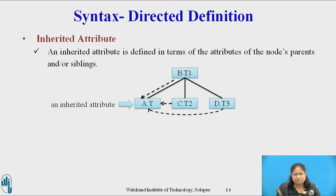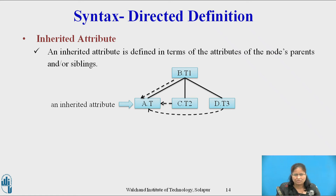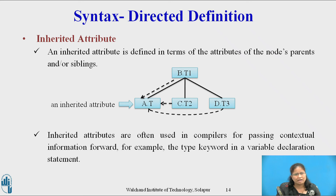An inherited attribute is one whose value at a node in the parse tree is defined in terms of the attributes at the parent and/or the siblings of that node. Inherited attributes can be used to check whether an identifier appears on the left or right of an assignment, in order to decide whether the address or the value of the identifier is needed. Inherited attributes are often used in compilers for passing contextual information forward — for example, the type keyword in a variable declaration statement.